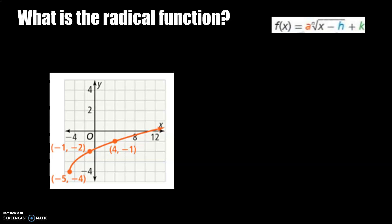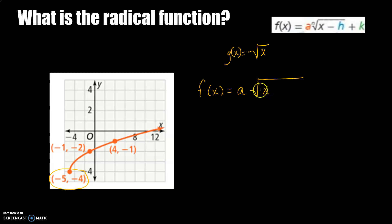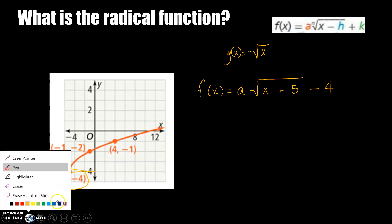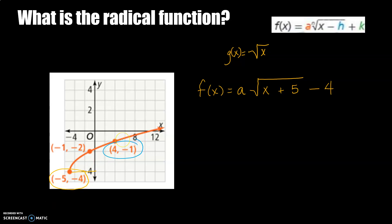I'm just going to do one example of these. I know right away by looking at this graph that the parent function is the square root of x, because of its general shape. When I write my new function, I don't right away know what a is, but I can look at the translated point — the one that's usually at (0, 0) — to figure out h and k. This graph went left 5, so it will have x plus 5 in it, and it went down 4, so it will have minus 4 in it.